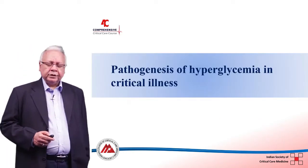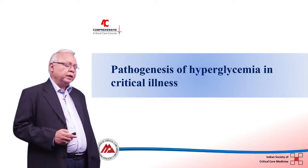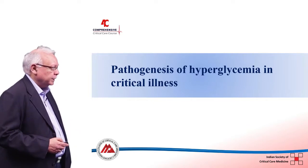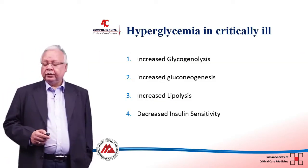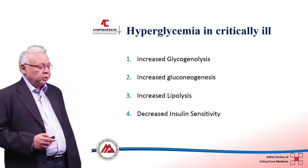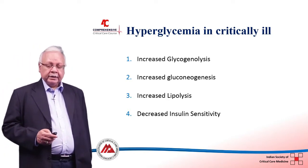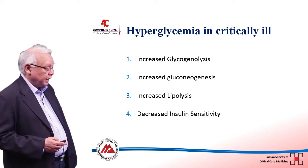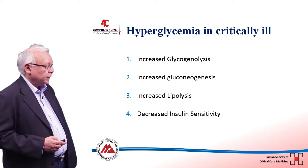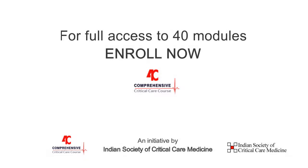So what is the pathogenesis? Why is this patient hyperglycemic if he is not diabetic? The pathogenesis of hyperglycemia in critical illness involves not increased glycogenesis, but increased glycogenolysis during stress, increased neoglucogenesis, increased lipolysis, and decreased insulin sensitivity during critical illness, as depicted in this diagram.